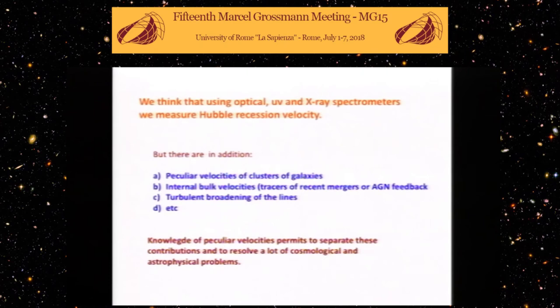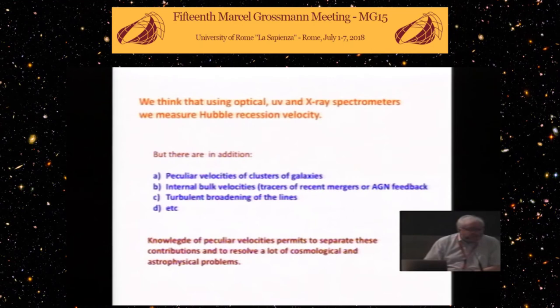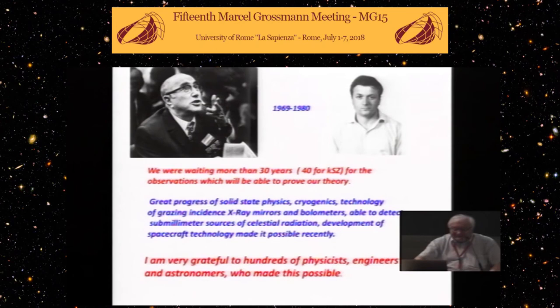Now there are beautiful X-ray calorimeter results from Hitomi spacecraft. In a few years much more bolometers will be launched to the sky. It will be possible to measure from the ground peculiar velocities of clusters of galaxies, internal bulk motion, tracers of recent mergers or AGN feedback. But turbulent broadening of the lines will be possible to measure using X-ray astronomy data. This is a beautiful thing. We will understand how everything is moving at redshifts of 1.